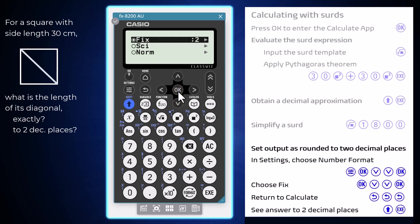With that set, return to calculate by pressing the exit key repeatedly. Now when we use the approximately equals to key combination, we see our answer rounded to two decimal places.